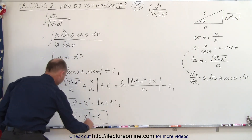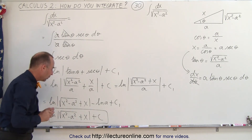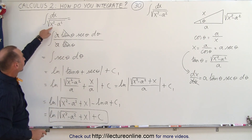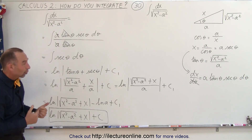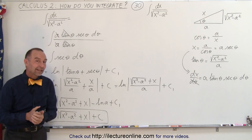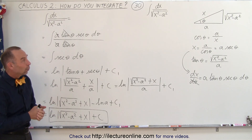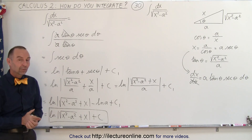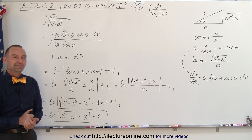So this can now be written as the natural log of the square root of x squared minus a squared plus x, plus a constant of integration. This is the result when you take the integral of dx over the square root of x squared minus a squared. Notice a slight difference in the way we approach the trig substitutions, but with a similar result. And that's how it's done.